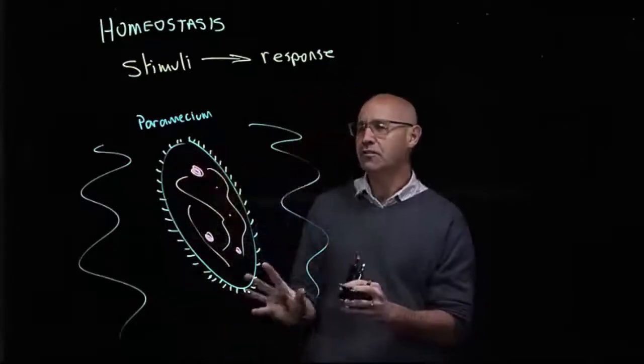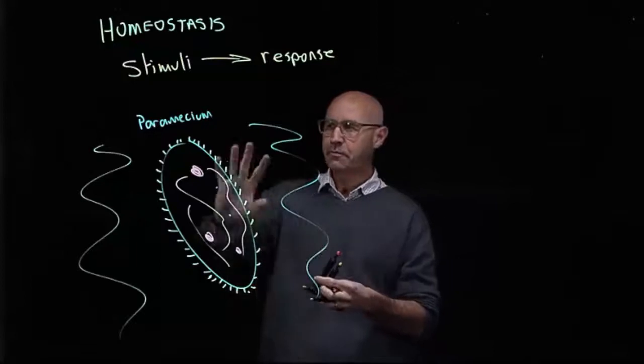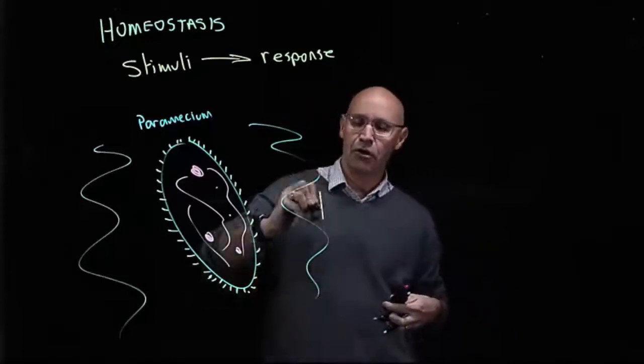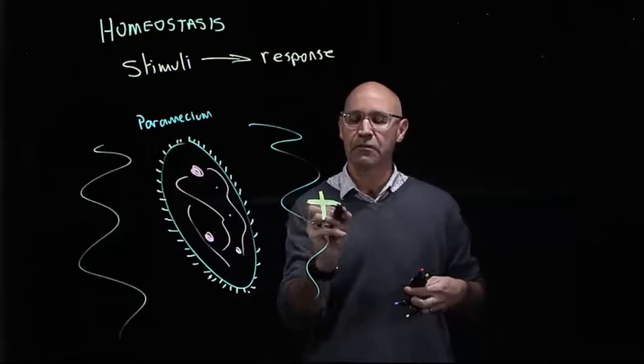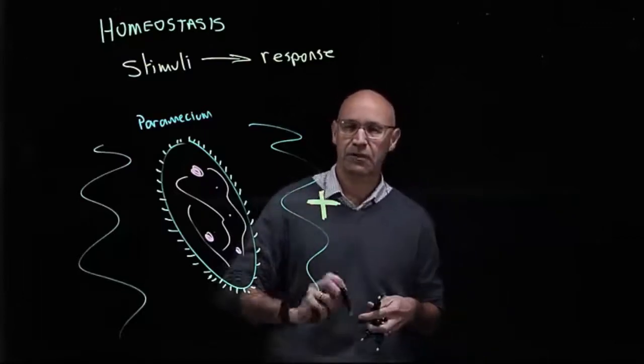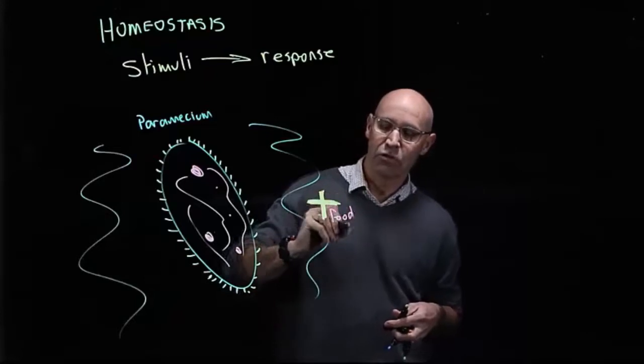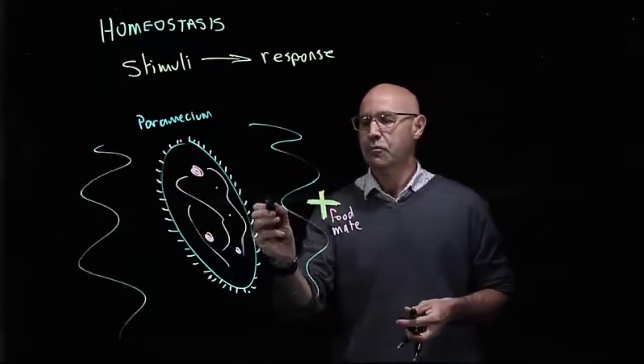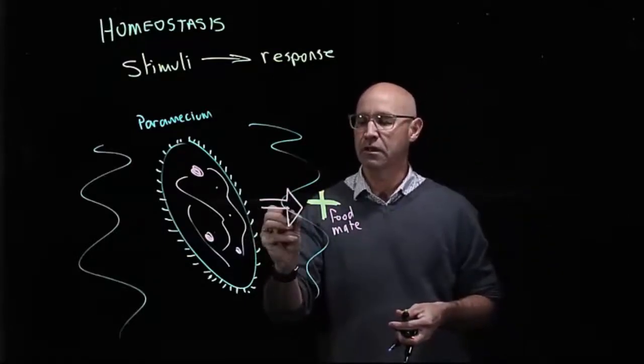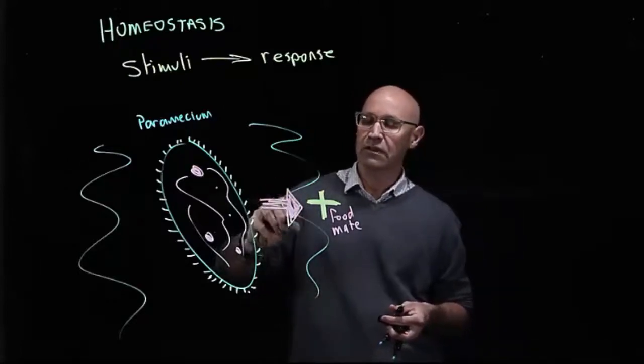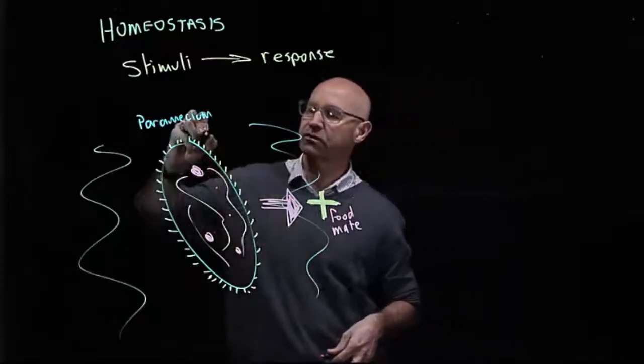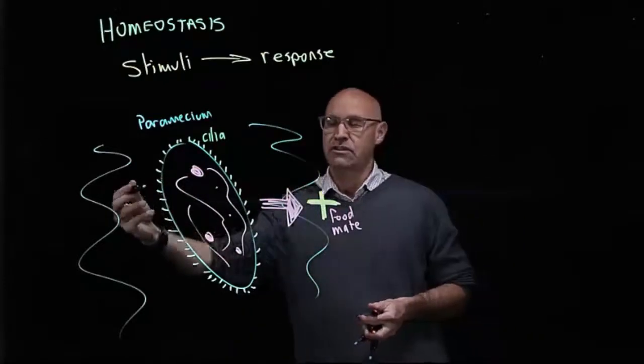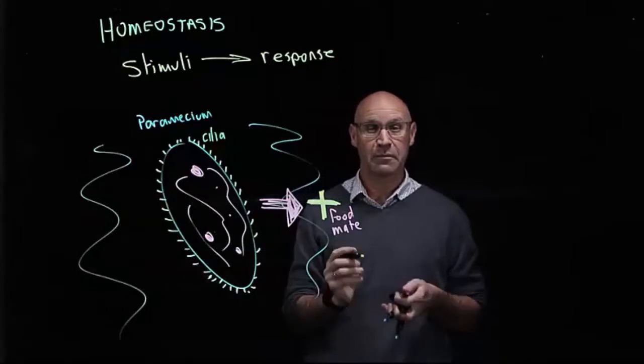So what can it do in terms of responses? It's able to detect stimuli. How does it respond? Well, if a stimulus is positive—beneficial to the paramecium, for example food or a mate—the paramecium is going to respond by moving towards that stimulus. It swims towards the stimulus by moving its cilia, the little hairs. When they beat, the paramecium is able to move towards a positive stimulus.